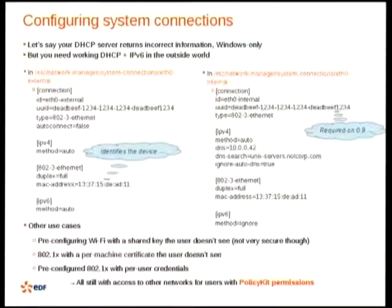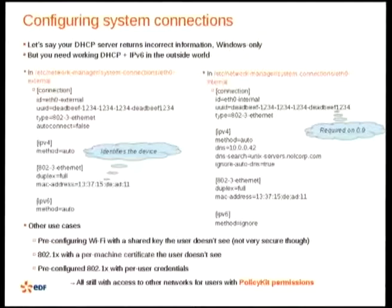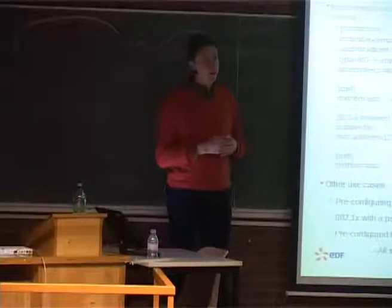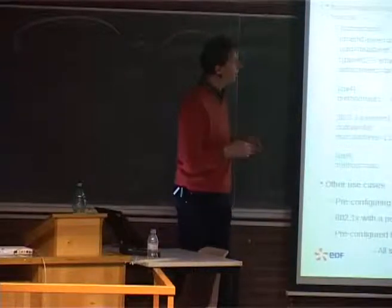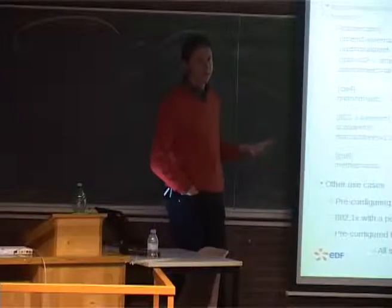Other use cases: you can pre-configure a pre-shared Wi-Fi key so users don't need to know the key. You can also do 802.1x with a machine certificate — you deploy the certificate on the machine and the user doesn't provide it — or with a user certificate, where you pre-configure 802.1x and the user is asked for personal credentials. All of that while still allowing users to create other connections for roaming. It is very flexible, and Network Manager is adding features like bonding support, which will make it relevant on servers as well.